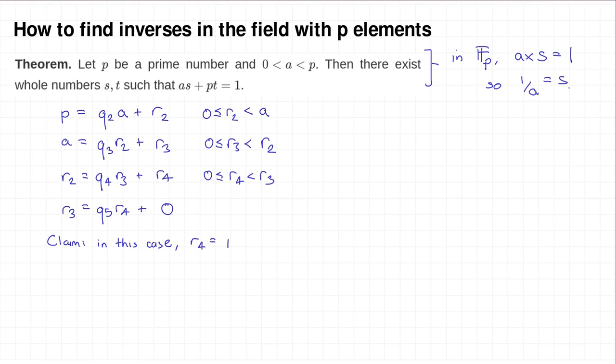So in this case, the case when r_4 was the last non-zero remainder, r_4 must be equal to 1. Well, why is that? So I'm going to establish that by showing you that r_4 actually is a divisor of the prime number p. So it's a positive number. It's less than p, because it's less than r_3, and r_3 is less than r_2, and r_2 is less than a, and a is less than p. So if it divides p, and it's less than p, then because p is a prime number, it must be 1.